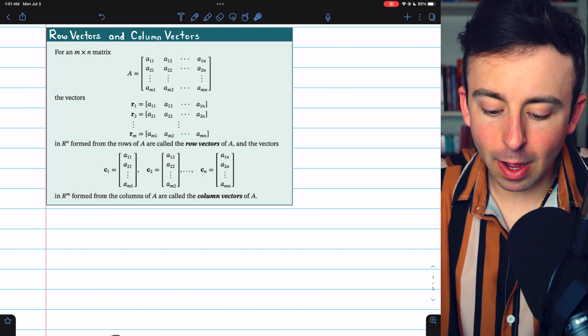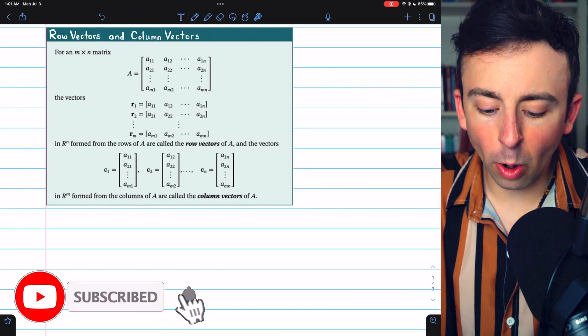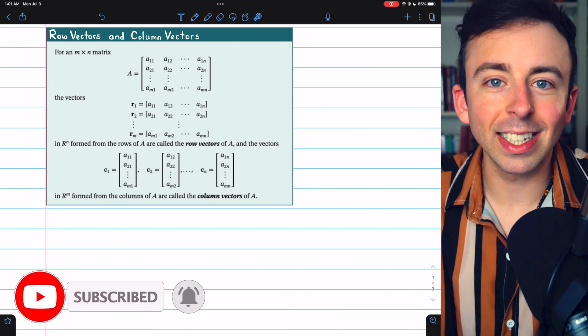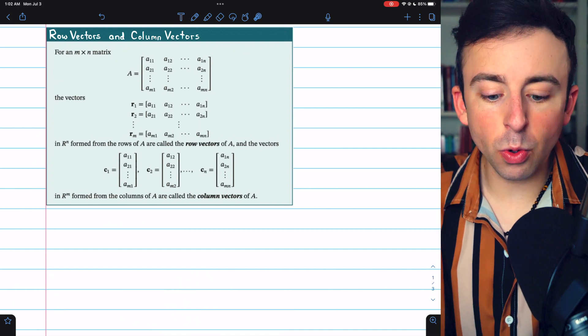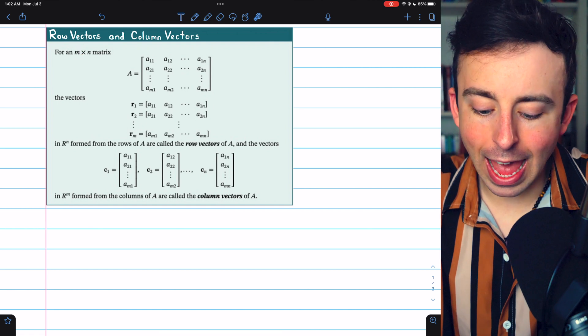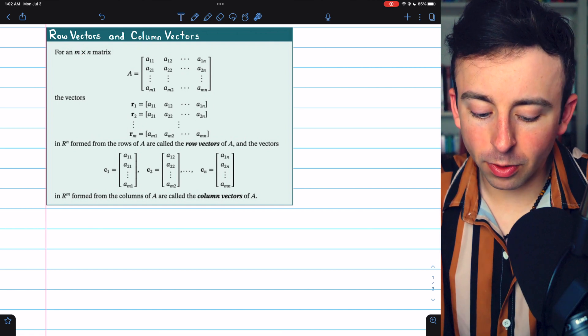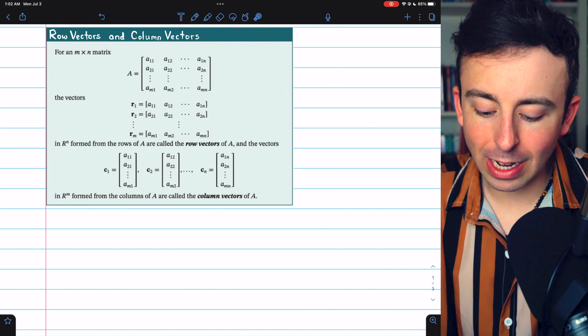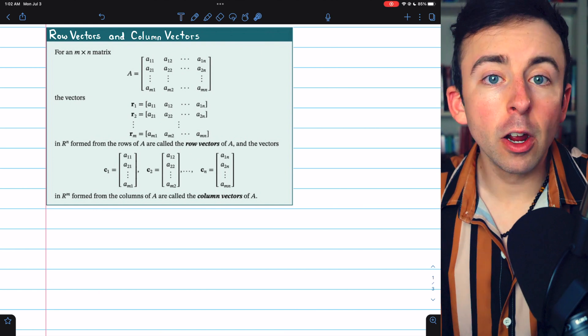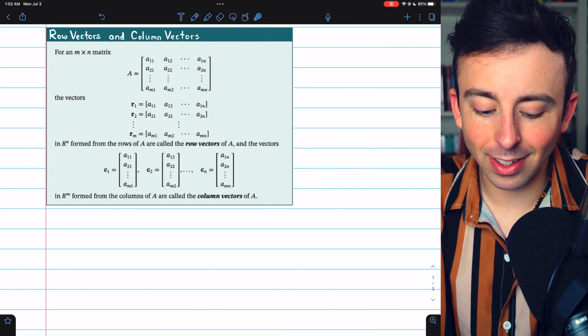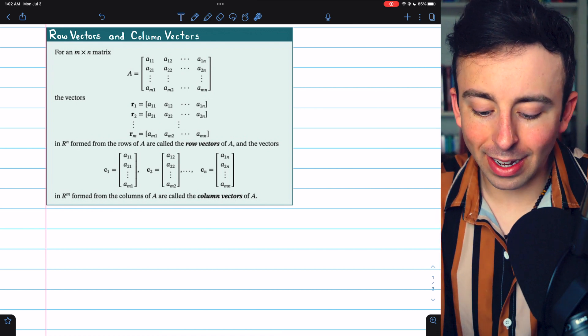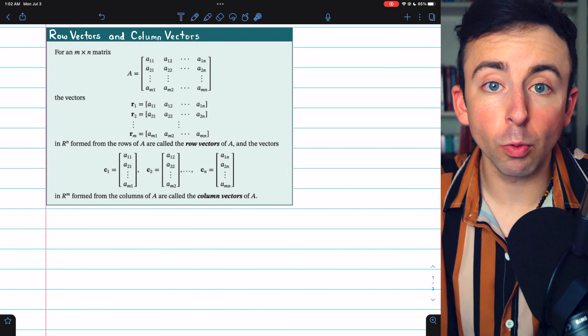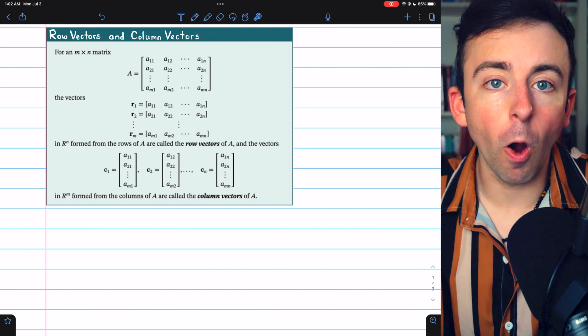We can think of a matrix as being made up of row vectors or column vectors. Here's the definition of those terms from Howard Anton's linear algebra text. Just as you would expect, in an m by n matrix, the vectors in Rn formed by the rows of the matrix are called the row vectors. Remember, if the matrix has n columns, then each row will have n entries.